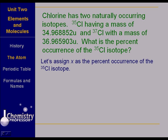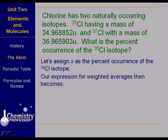So let's assign x as the percent occurrence of the chlorine-35 isotope. Then we can express the occurrence of the chlorine-35 isotope like this: 34.968852 atomic units, or Daltons if you will, that comes from the problem itself, times x, its percent occurrence. We don't know what it is. Plus the atomic weight of the other isotope, also expressed in Daltons, times 100 minus x.